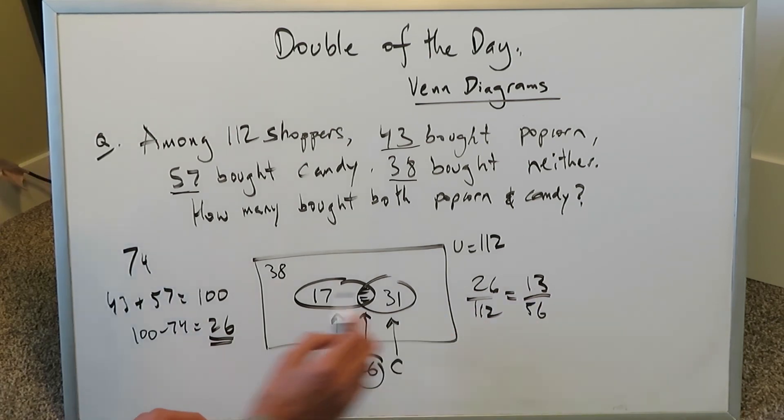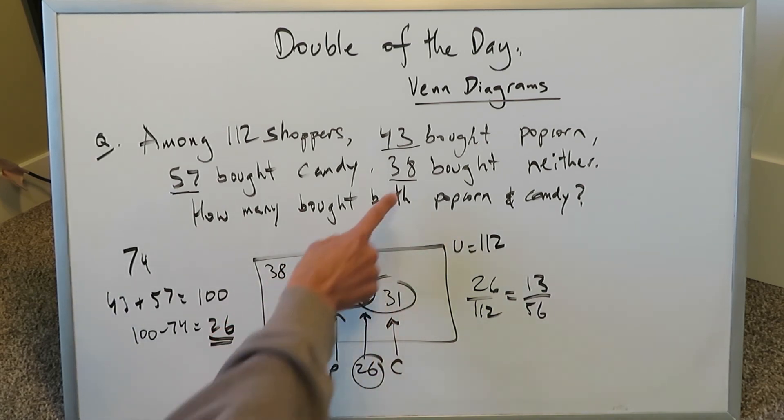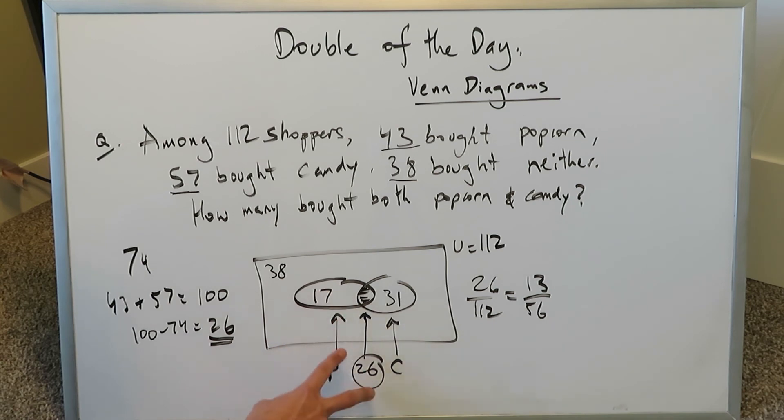As a final conclusion to this question, let's break everything down. 112 total, 38 bought neither, 43 bought popcorn. See, 17 plus this 26 is 43. Of those 43, 17 only bought popcorn and the remainder, which were 26, also bought candy. Of these 57 who bought candy, 31 bought only candy but 26 bought both popcorn and candy.